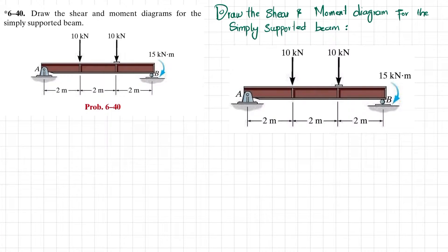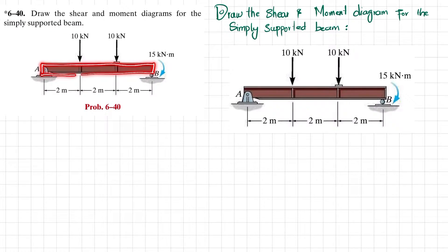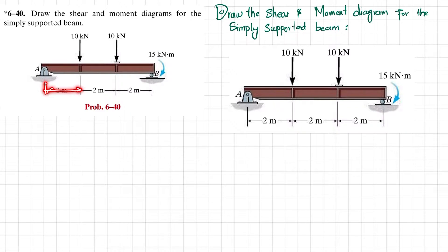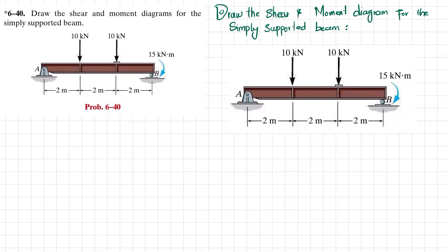Welcome back. Let's start with a new problem, that is 6-40. The statement is: draw the shear force and bending moment diagrams for the simply supported beam. There are two point loads of 10 kilonewtons — one acting at a distance of 2 meters and the other at 4 meters from point A — and there is an external moment of 15 kilonewton·meters.